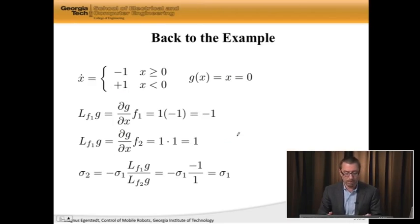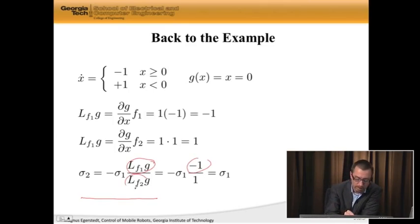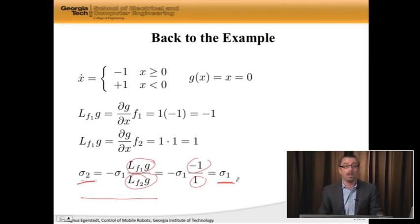Okay, so now, let's try figuring out what the sigma should actually be. Well, we had a formula for sigma 2. It is equal to negative sigma 1, and then these two, the derivatives divided by each other. Well, this was negative 1, and this was plus 1, so sigma 2 is simply equal to sigma 1.